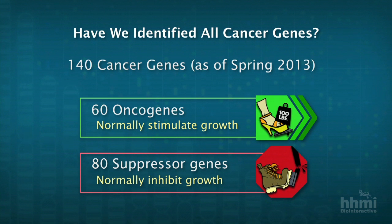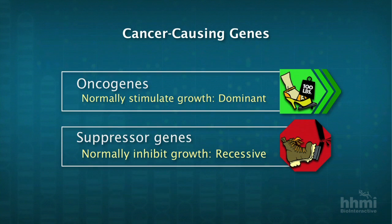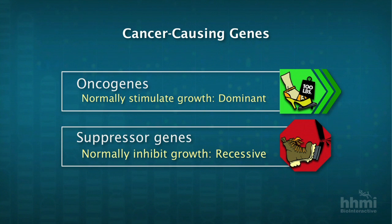Some cancer genes are oncogenes that, when mutated, now function as accelerators driving cell growth inappropriately, whereas others — the tumor suppressor genes — normally function as brakes, but when broken or disabled, the cell cycle can proceed more quickly.